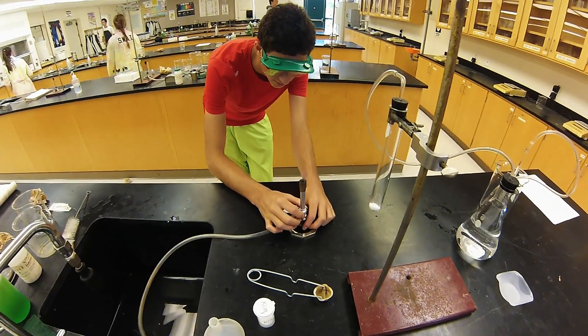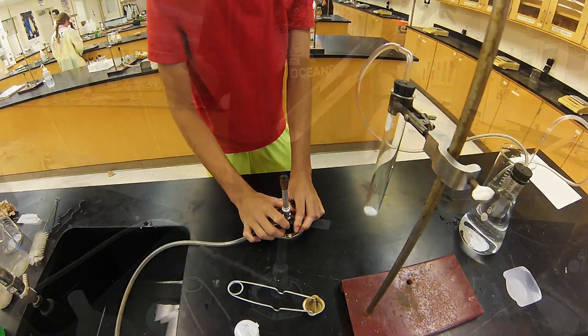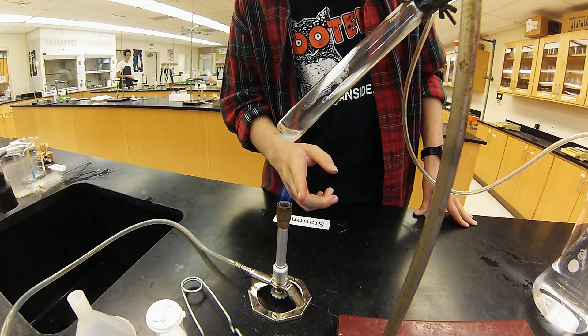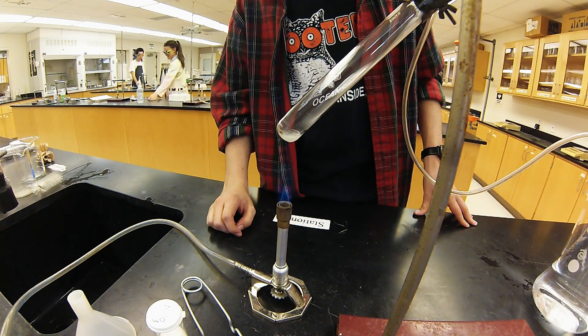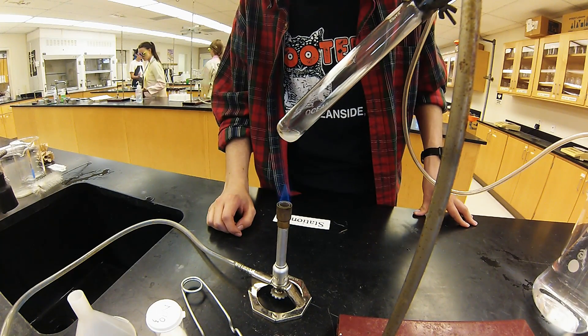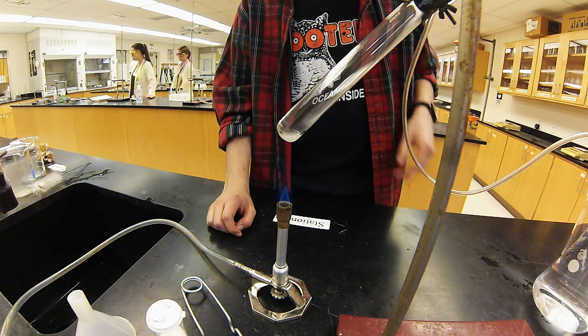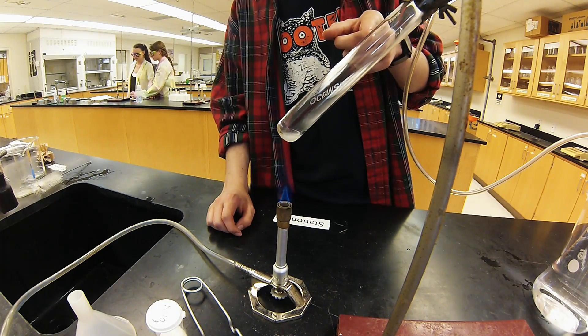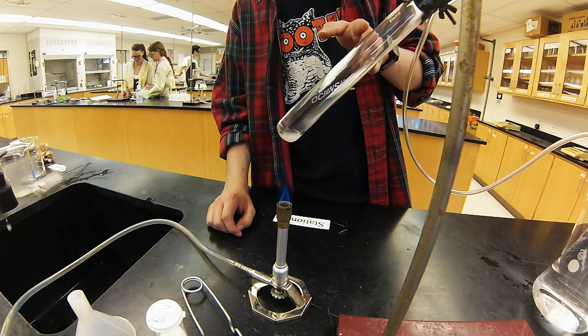Look at that flame. As the potassium chlorate is being heated, it's producing oxygen gas and that's building the pressure in this large test tube we have and pushing gas out into our Erlenmeyer flask.